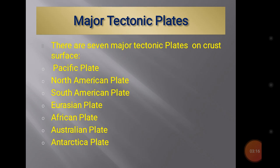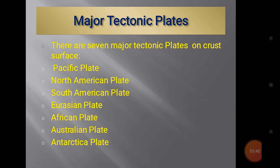Major tectonic plates: there are seven major tectonic plates on the Earth's surface. The Pacific plate is present directly below the Pacific Ocean. The North American plate is present under North America. The South American plate is under South America. The Eurasian plate — 'Eurasian' has two words: 'Euro' stands for Europe and 'Asian' stands for Asia — so the Eurasian plate is present under both Europe and Asia. Then the African plate below the African continent, the Australian plate, and the Antarctic plate.